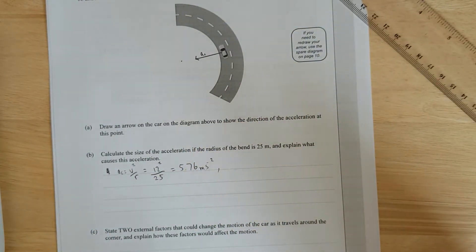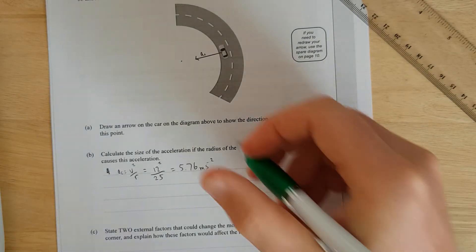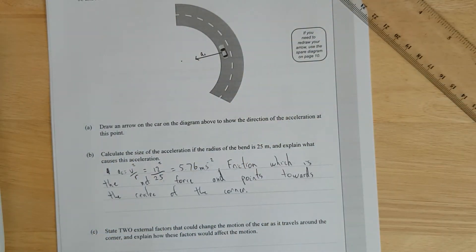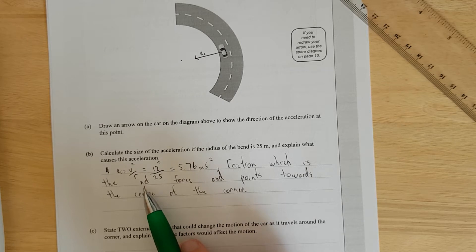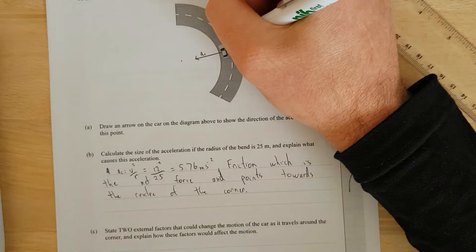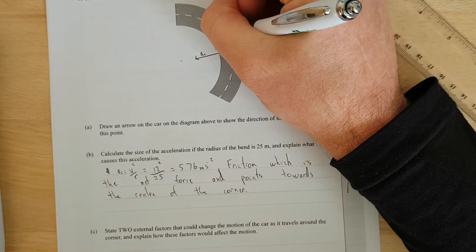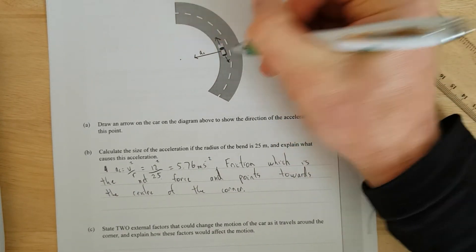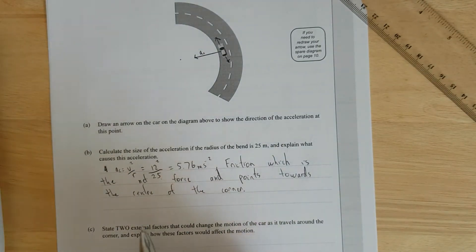And what causes this acceleration? Friction. Right, so I said friction, which is the net force. Always use net force. Net force means it's like when you've added all the other forces, this is the only force that's left. And you've got to say it points towards the center.